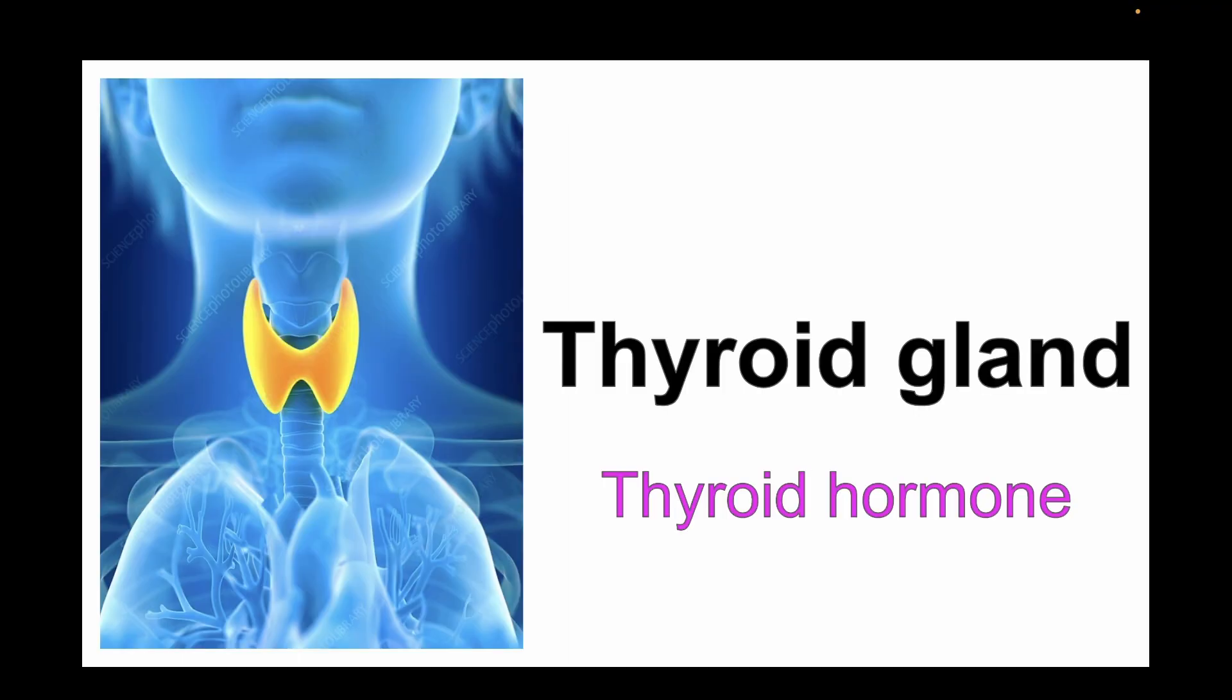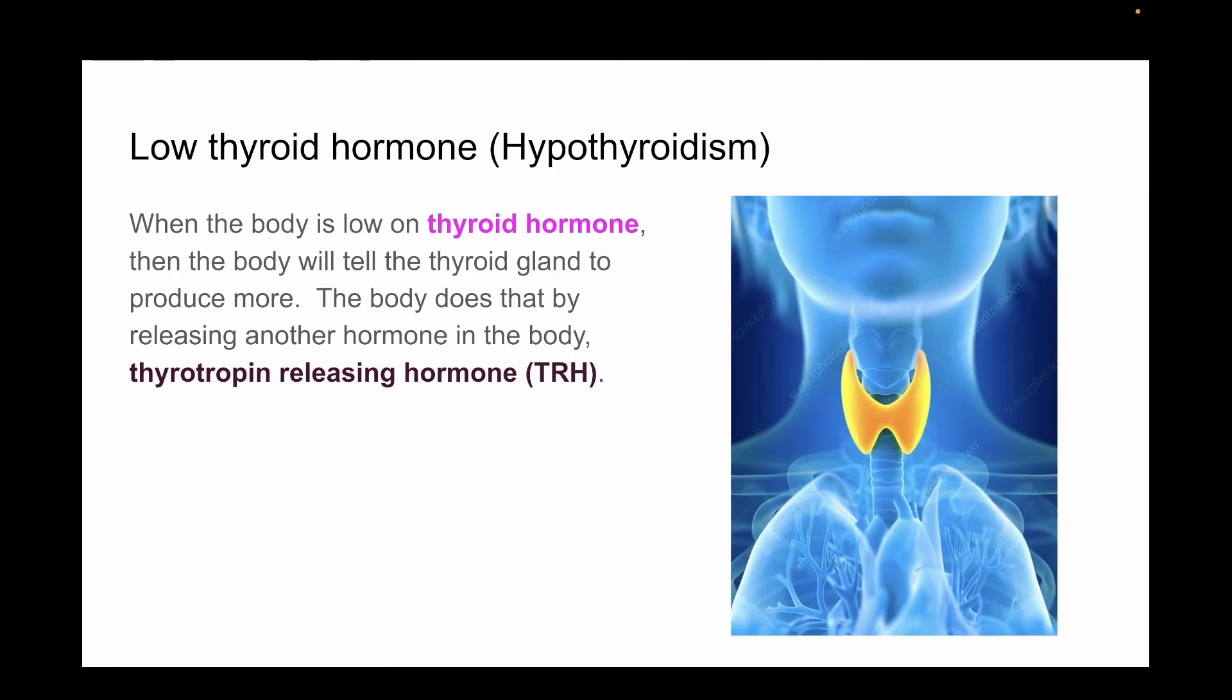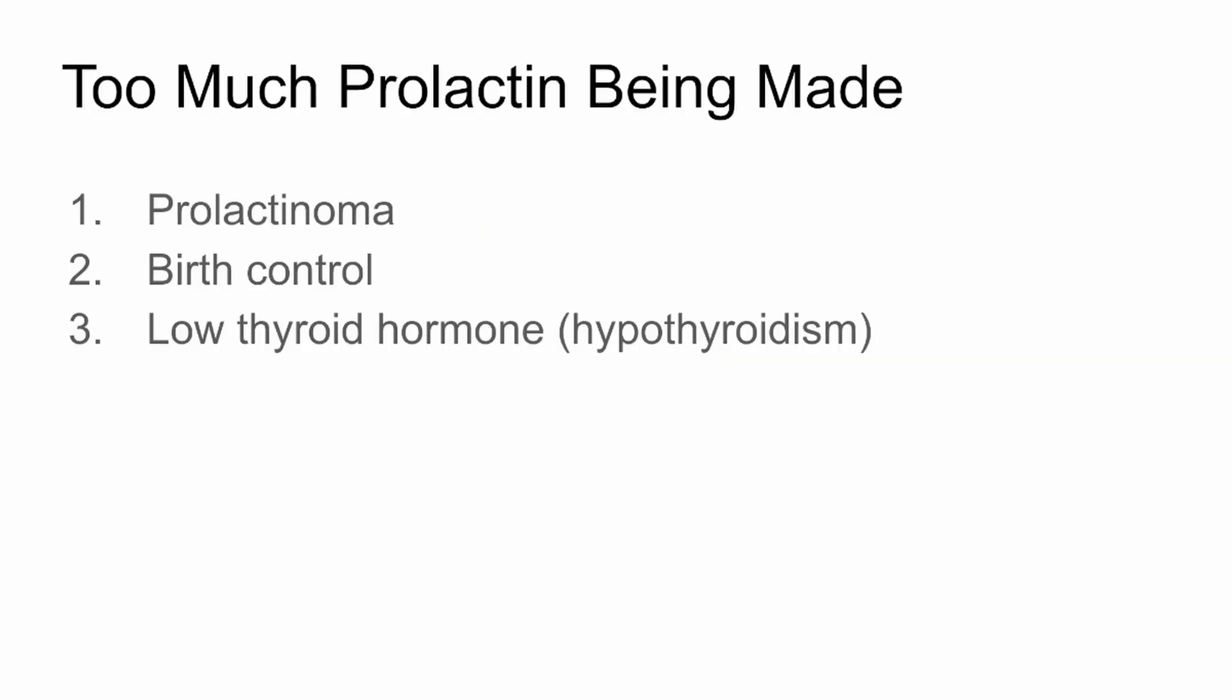Next, we need to discuss an organ called the thyroid gland found in our neck. One of the thyroid gland's roles in the body is to produce a hormone called thyroid hormone. When the body is low on thyroid hormone, the body will tell the thyroid gland to produce more. The body does this by releasing another hormone, thyrotropin releasing hormone, or TRH for short. Unfortunately, TRH also promotes the increase of prolactin in the body. In patients with thyroid disease, the body may constantly produce TRH resulting in increased prolactin. Now we have three.